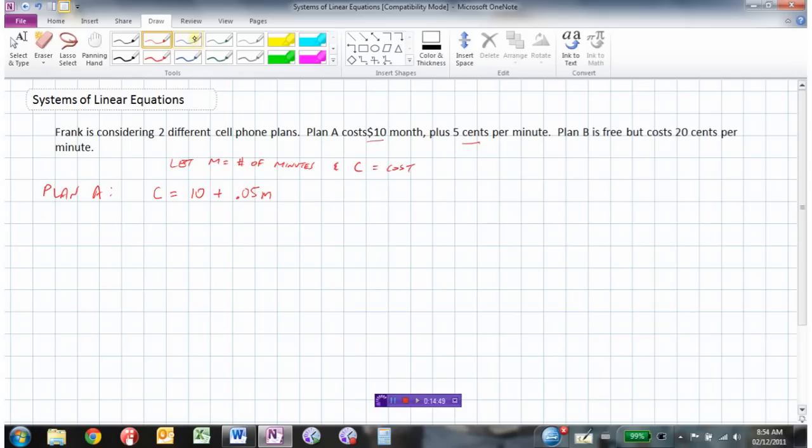Plan B's cost is simply based on the number of minutes. So 20 cents per minute, so that's 0.20 or 0.2, I will do that, 0.20M.